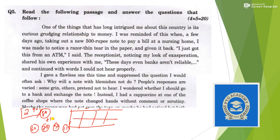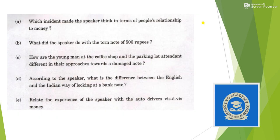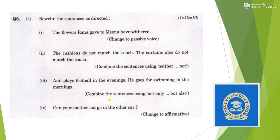Question 5 is reading comprehension. You read a passage and answer five questions based on it, each carrying 4 marks, totalling 20 marks. You answer according to the passage — this is similar to comprehension exercises done in school.